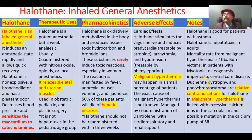Duchenne muscular dystrophy — where a defective dystrophin gene is missing — is a pediatric disease that causes progressive muscle loss. Pheochromocytoma, involving excessive release of catecholamines, especially epinephrine, from an adrenal medulla tumor, is also a contraindication. These are all relative contraindications for Halothane.